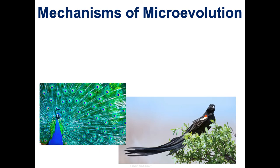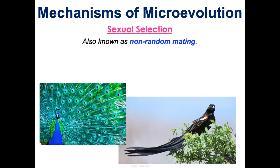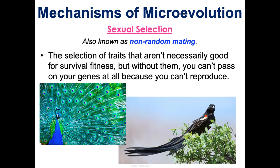Last, and possibly the most fascinating, is sexual selection, also referred to as non-random mating. This is the favoring of traits that don't necessarily help you survive, but without them you're unable to reproduce because no one wants to mate with you — so your genes can't be passed on.